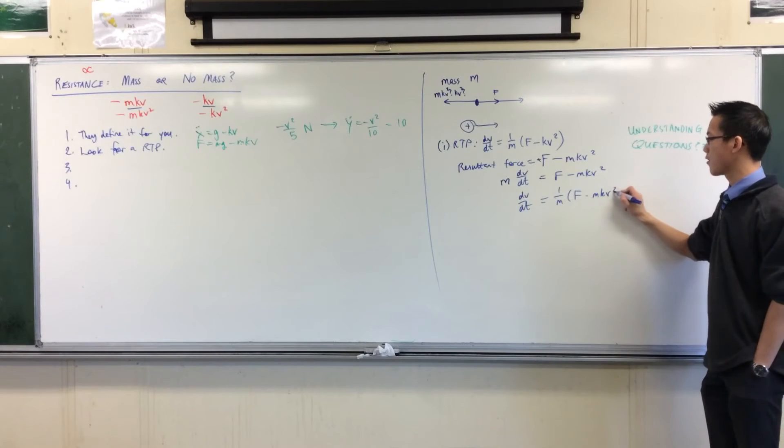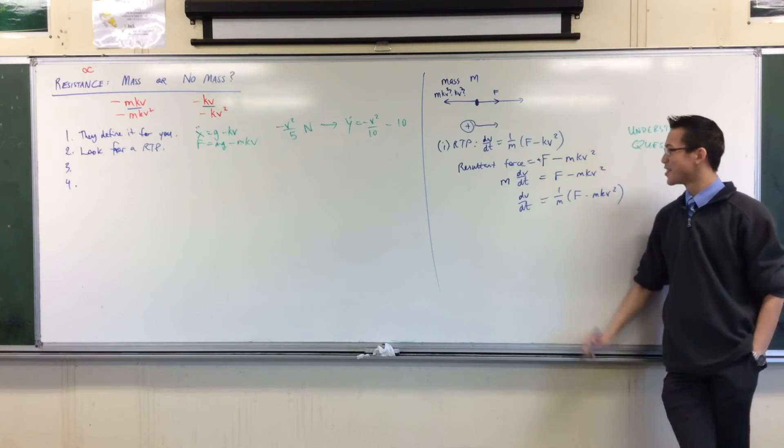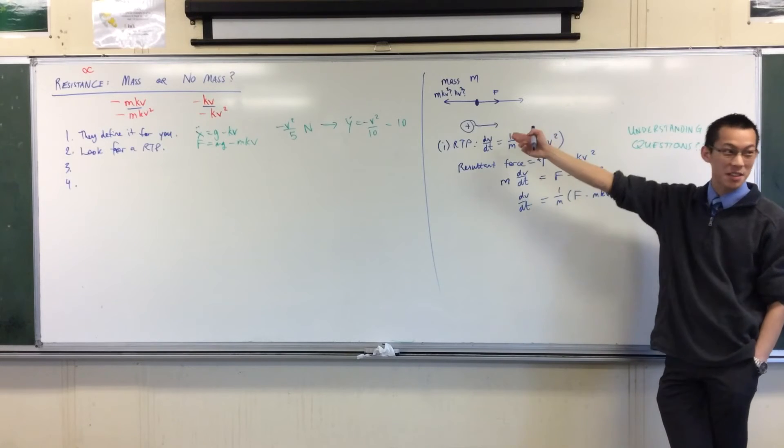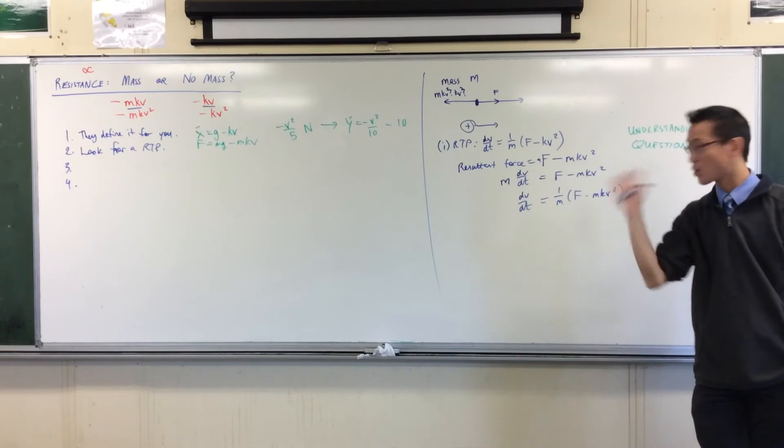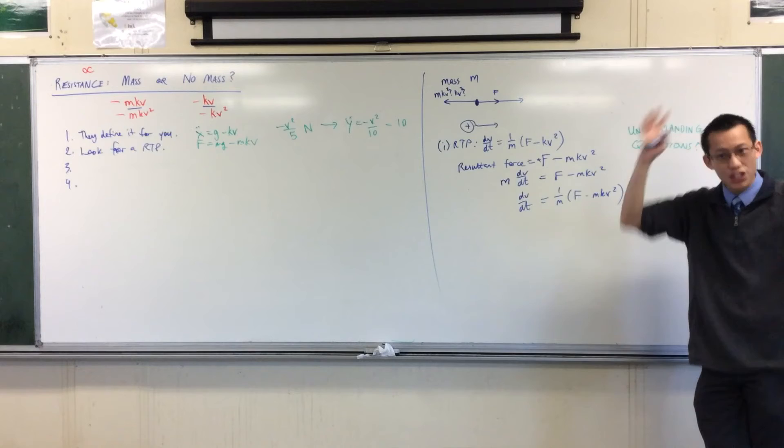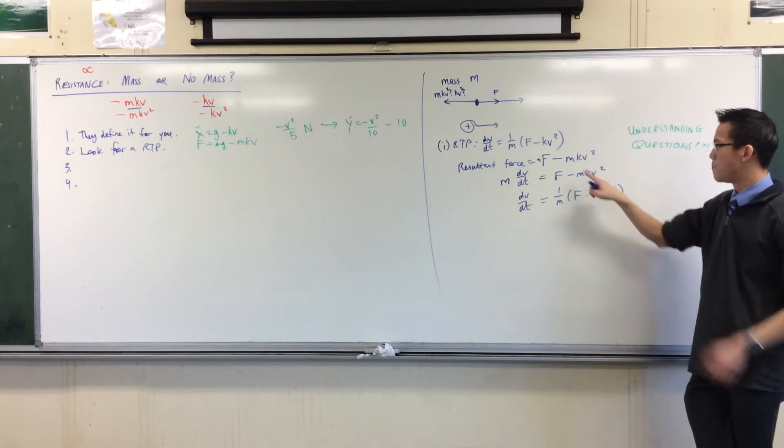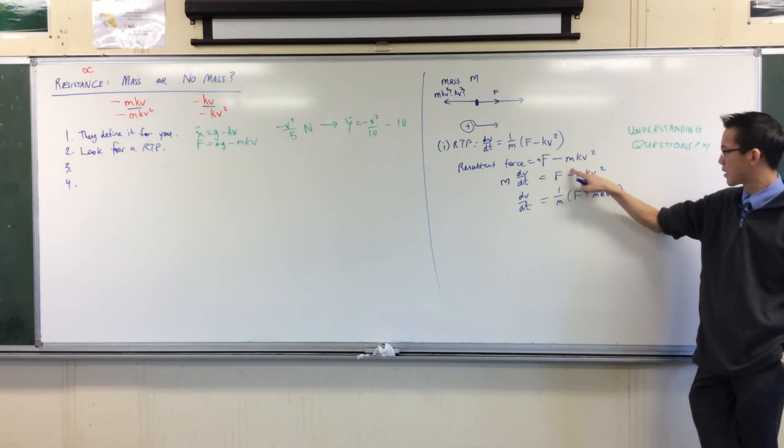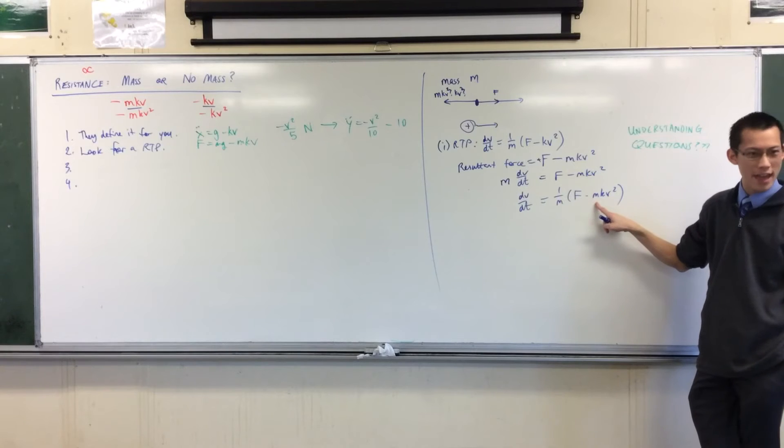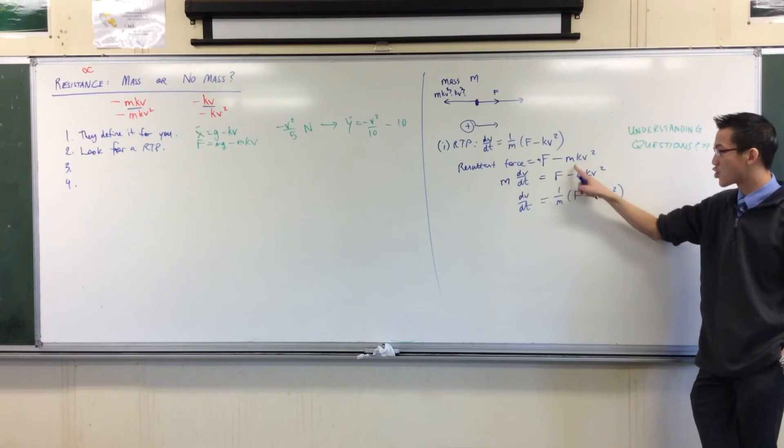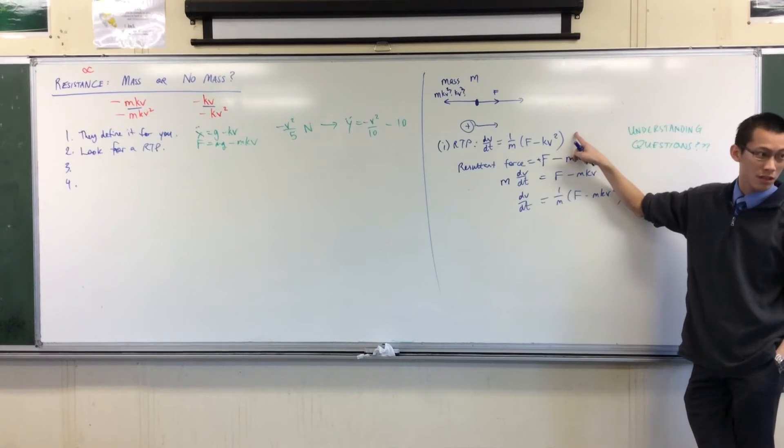So you got dv/dt over here, 1 over m, F minus mkv squared. So I tested this out but I didn't get to the result they were after. So clearly in their envisioning of the question this is not where they began because that's why I have an extra factor of m over here.